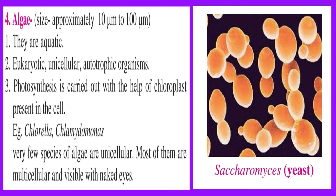4. Algae — size approximately 10 micrometers to 100 micrometers. Characteristics: 1. They are aquatic. 2. Eukaryotic, unicellular, autotrophic organisms. 3. Photosynthesis is carried out with the help of chloroplasts present in the cell. 4. Examples: Chlorella and Chlamydomonas. 5. Very few species of algae are unicellular; most of them are multicellular and visible with the naked eye.